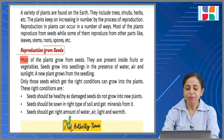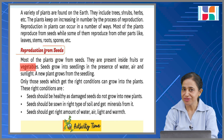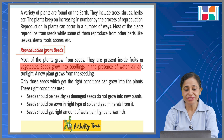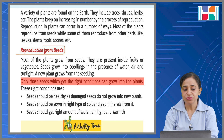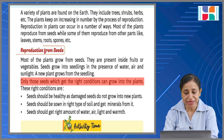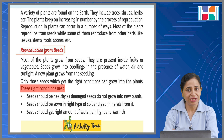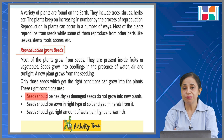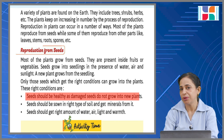Most of the plants grow from seeds, and seeds are present inside fruits or vegetables. Seeds grow into seedlings in the presence of water, air, and sunlight. A new plant grows from the seedling. Only those seeds which get the right conditions can grow into plants. The right conditions are: seeds should be healthy, as damaged seeds do not grow into new plants.